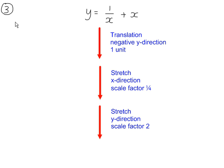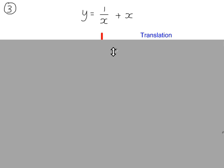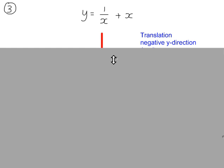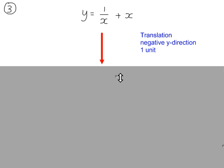Example 3 — we're going to apply a translation in the y direction, followed by a stretch in the x direction, and then finally a stretch in the y direction. Starting with a translation in the negative y direction by one unit. This is straightforward — we just need to put minus 1 on the end of the equation here to get this.